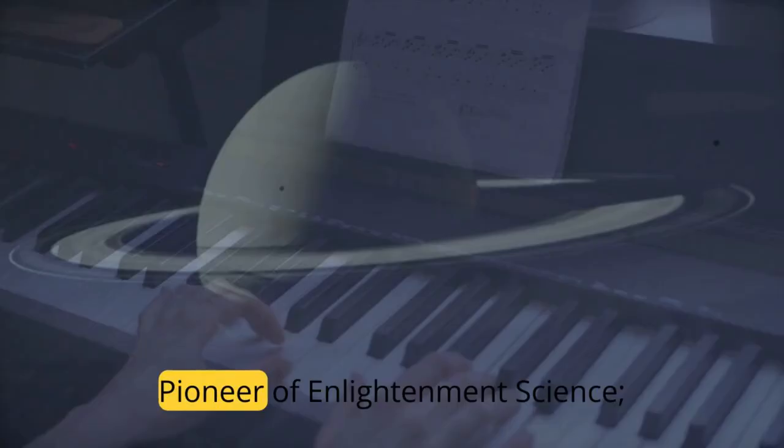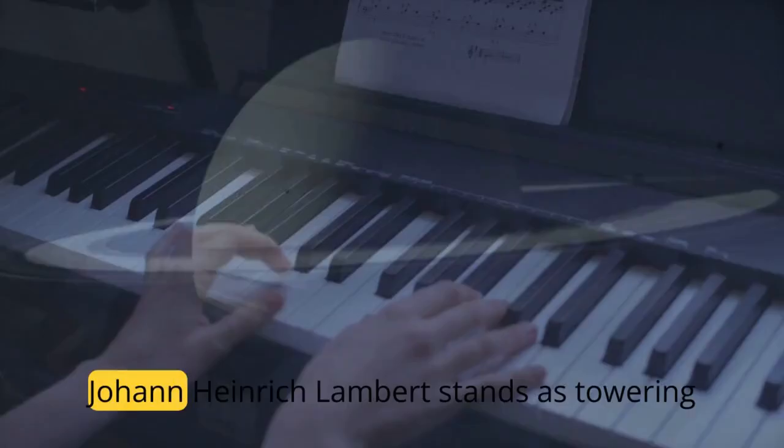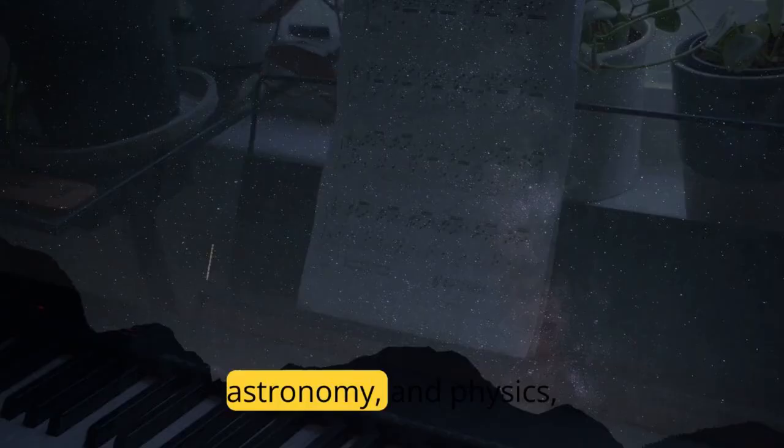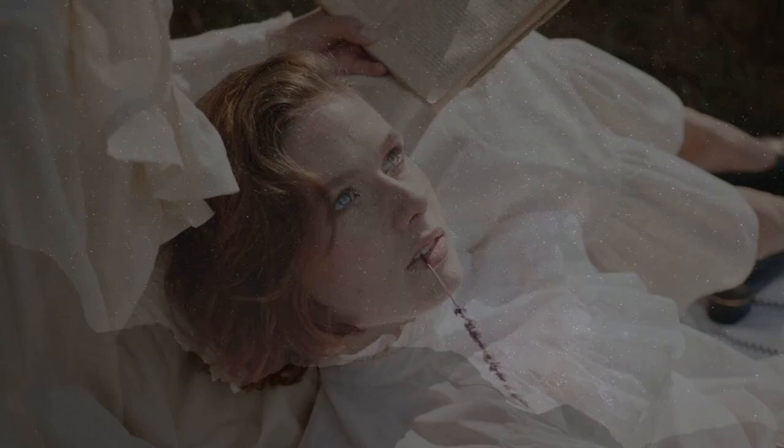Johann Heinrich Lambert, A Pioneer of Enlightenment Science. Johann Heinrich Lambert stands as a towering figure in the realms of mathematics, astronomy, and physics, his contributions shaping the scientific landscape of the 18th century.